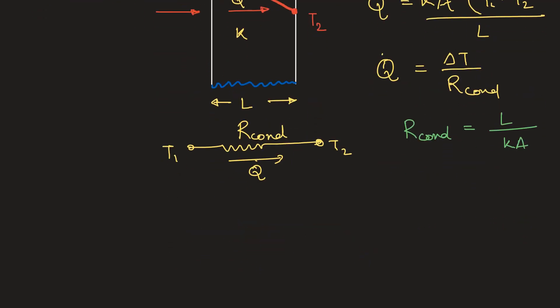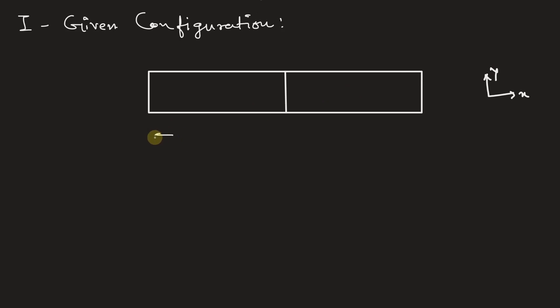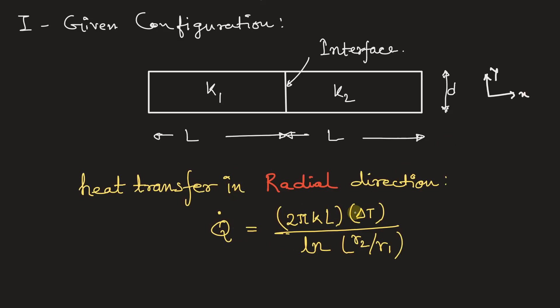We are given a similar kind of configuration. According to the given configuration, there are two rods of length L each. From here to here it is L and from here to here as well. The diameter is D. The thermal conductivity of this side of the rod is K1 and K2. Here is the interface. In the problem, it's given that the contact resistance is negligible as well as the heat transfer in radial direction is also negligible. So this radial direction heat flow is equivalent to zero.